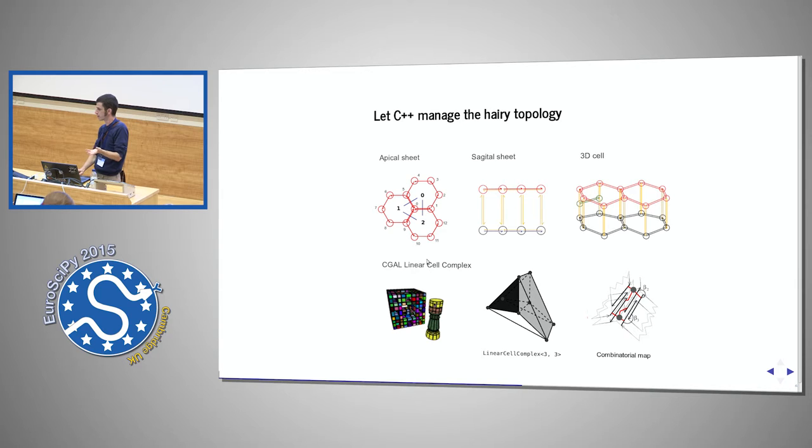So thankfully the CGAL linear cell complex library does this very well and defines an object that's called a linear cell complex, and the cell term here is not there for nothing. It's effectively exactly the kind of object we're looking at and it deals with all the nasty combinatorics.